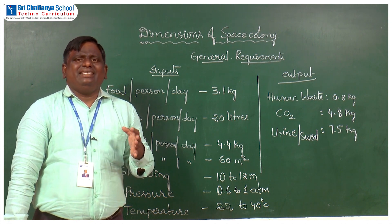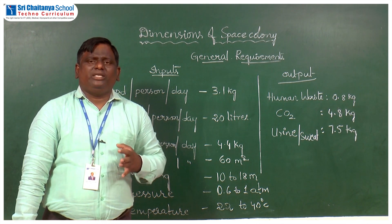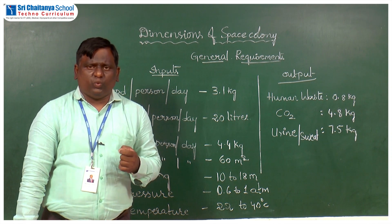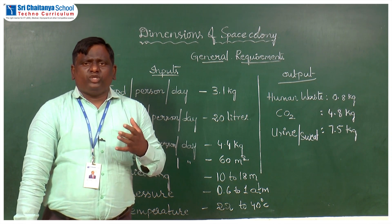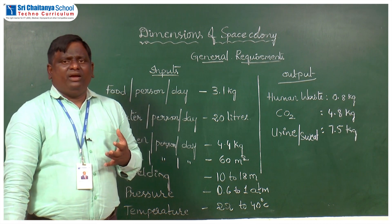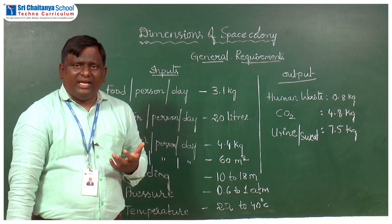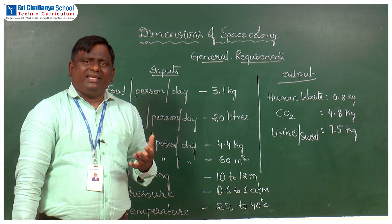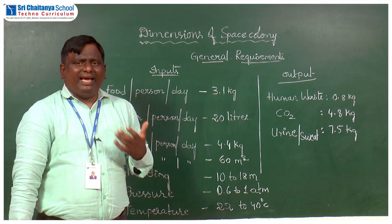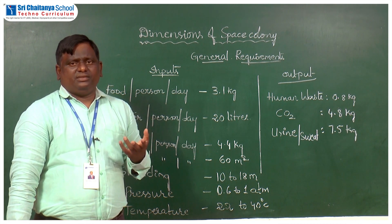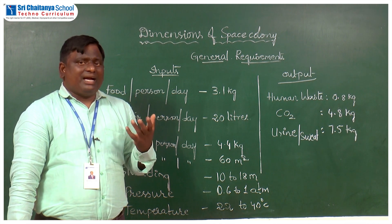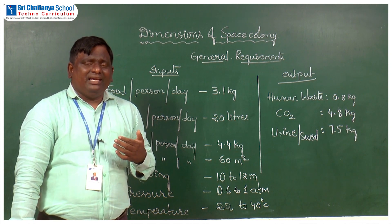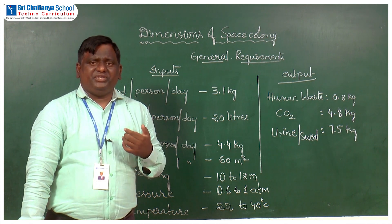1G is approximately equal to 9.8 meters per second squared. That should be the minimum gravity required for the survival of human civilization. On Earth, we have that gravity naturally because of Earth's mass and radius. But when it comes to the space colony, we have to generate this gravitation artificially.